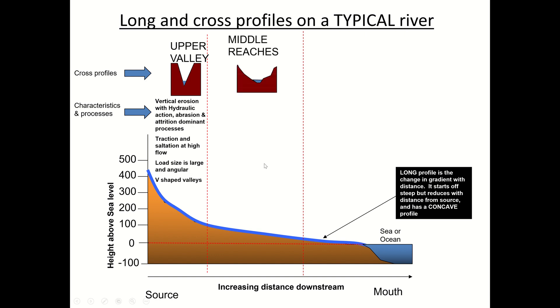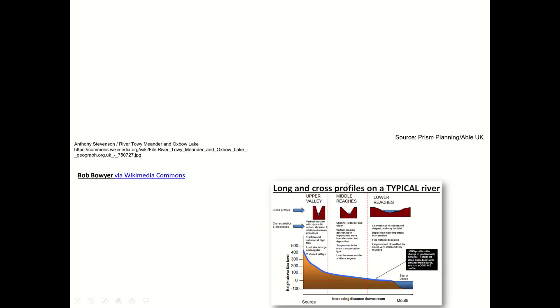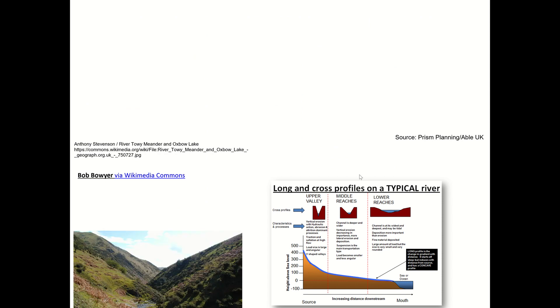In the middle reaches that will start to level out, so the river will start eroding laterally from side to side and that widens the river valley, widens the channel. Vertical erosion decreases in importance. We'll probably have more suspension as the main transportation type rather than traction with that larger angular material. Then when we get downstream we'll get really flat wide valleys with a really wide river. Once we get down into the lower reaches of the river, deposition will probably be more important than erosion and a lot of fine material will be deposited.